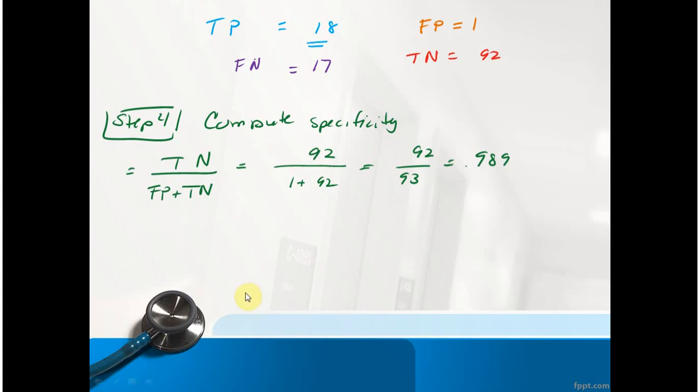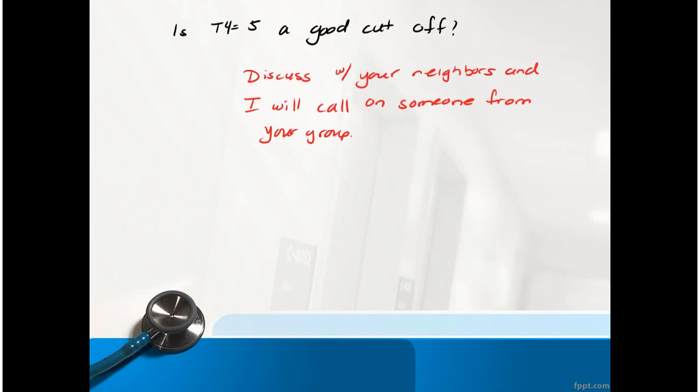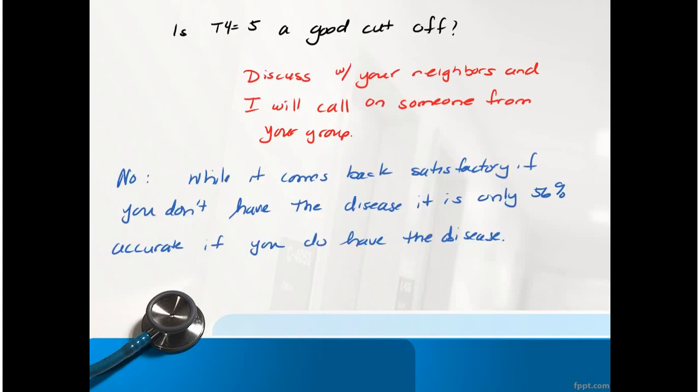What about specificity? Well, these are the people that are truly absent from the disease that I correctly identified - the rate I correctly identified these individuals is 99%. So we discussed this in class. We said 99% is pretty good, but some people were a little bit uncomfortable with the 56%. They didn't like the idea that a large number of people that had the disease were being told go home, you're fine.